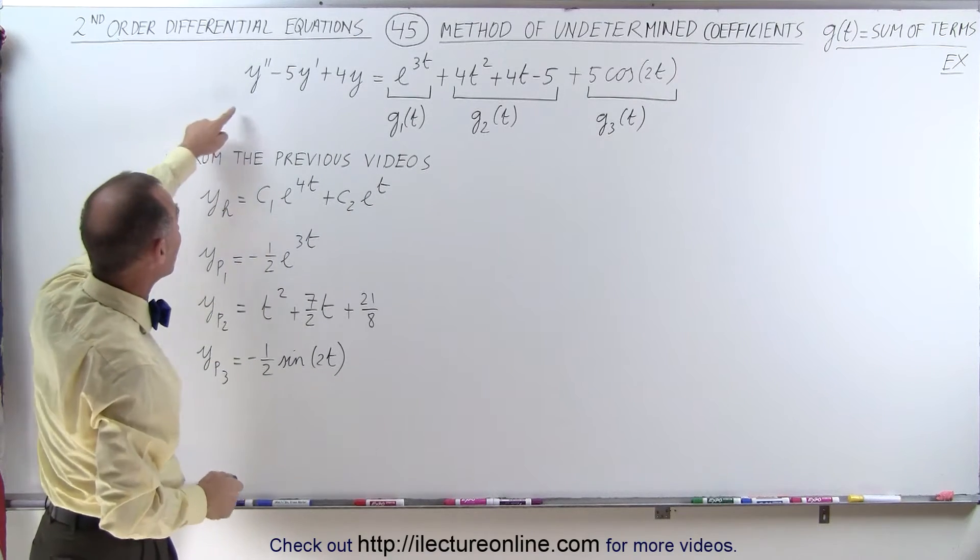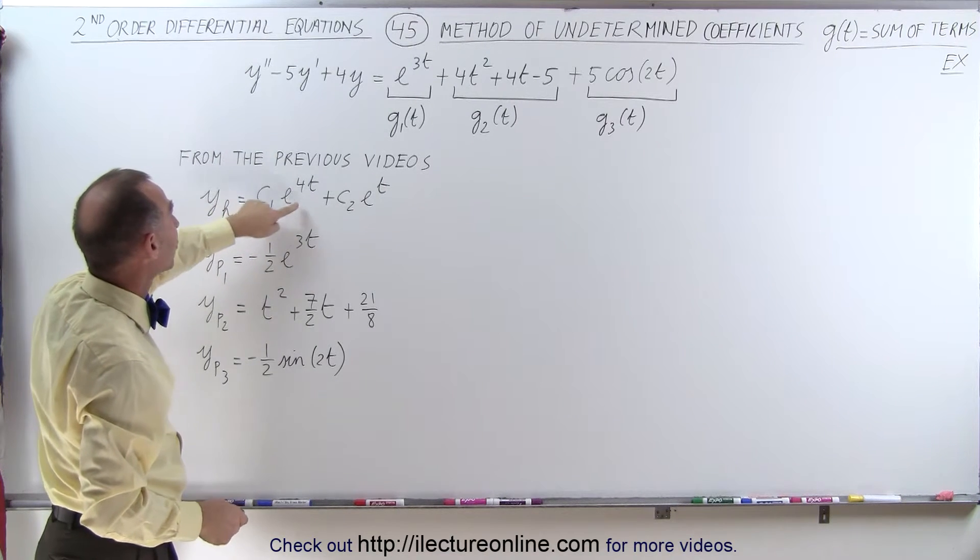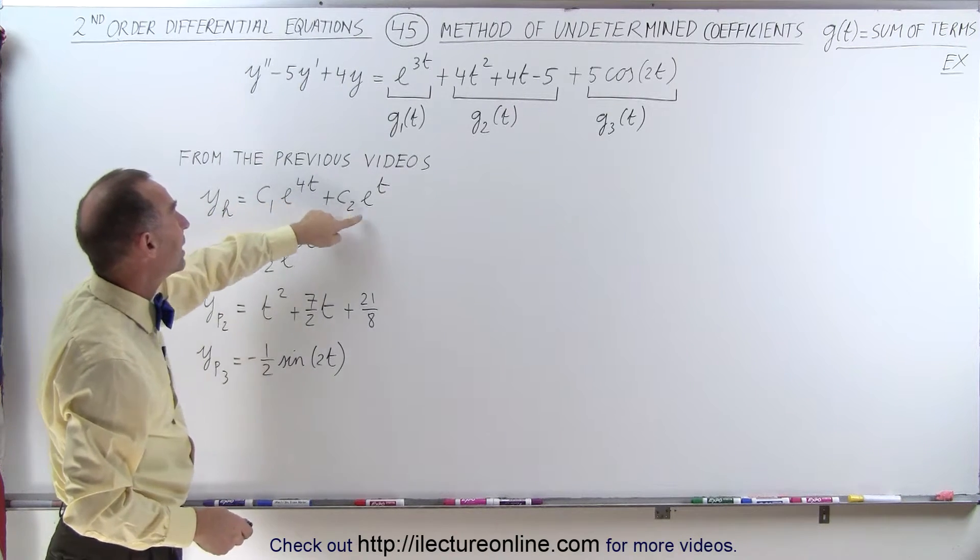So from the previous video, if we make this into a homogeneous equation, the homogeneous solution was C1 e to the 4t plus C2 e to the t.